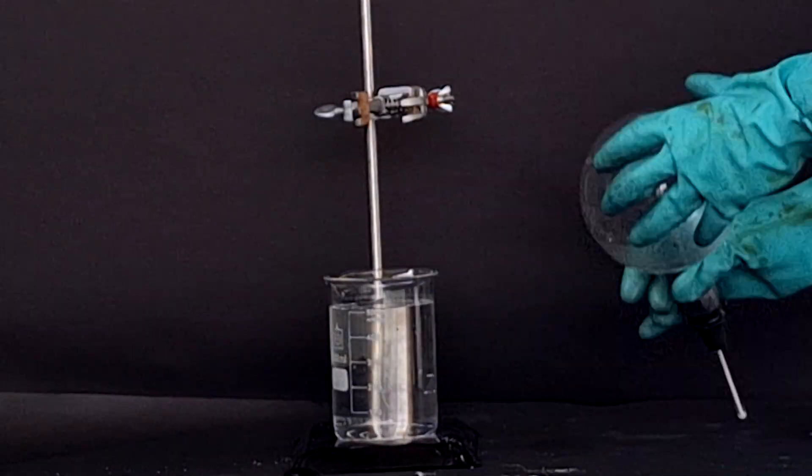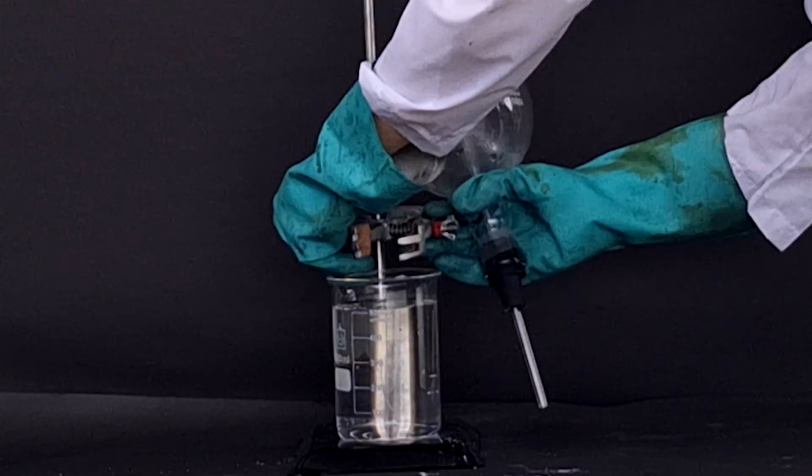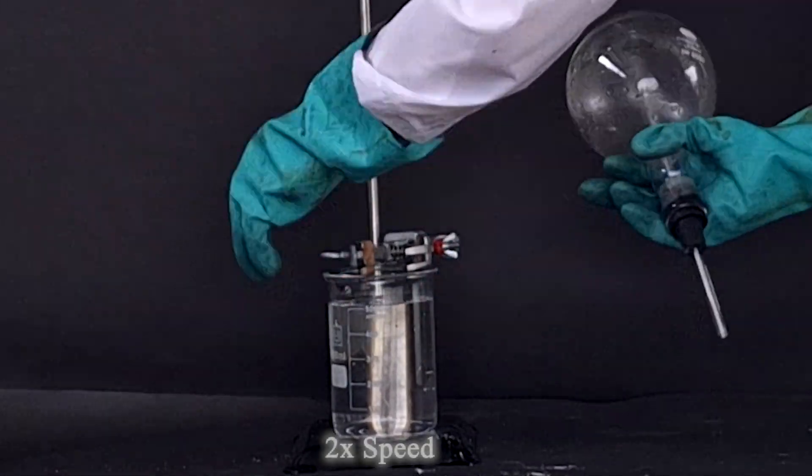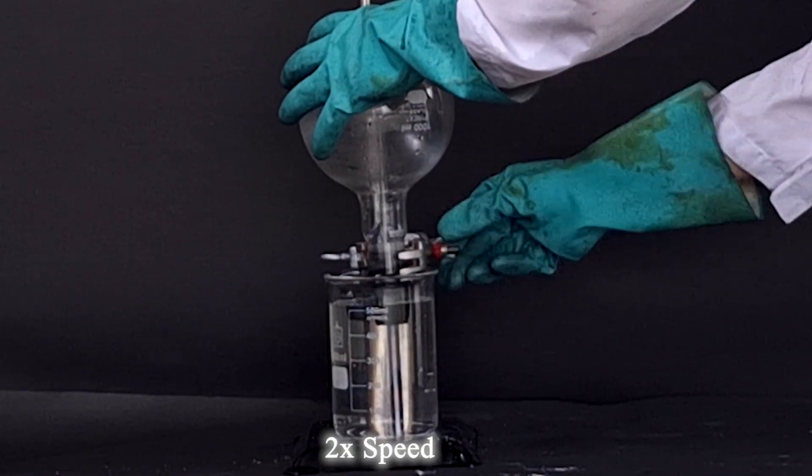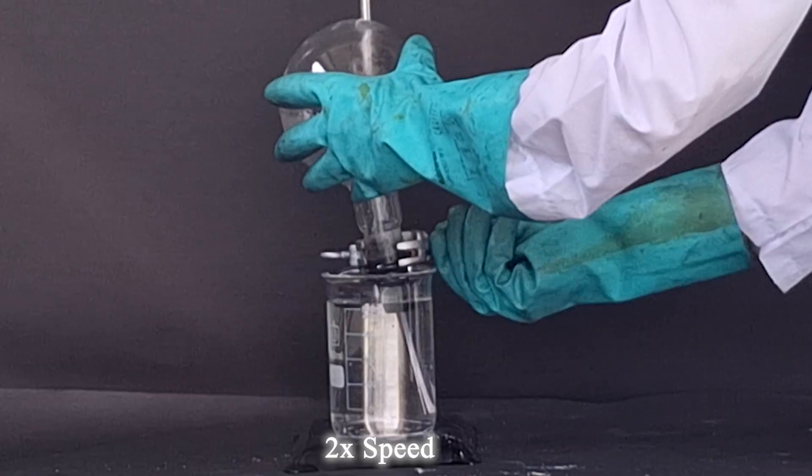After waiting roughly 2 minutes for all the ammonium hydroxide to boil, I separated the boiling flask, now in theory containing ammonia gas, from the preparation chamber.